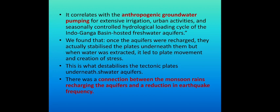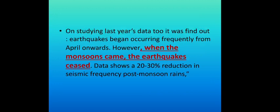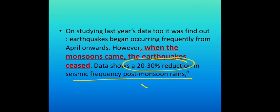There is a connection between monsoon rains recharging the aquifers and a reduction in earthquake frequency. Studying last year's data, it was found that earthquakes begin occurring frequently from April onwards. However, when the monsoon came, earthquakes ceased. Data shows a 20-30% reduction in seismic frequency post monsoon rains.